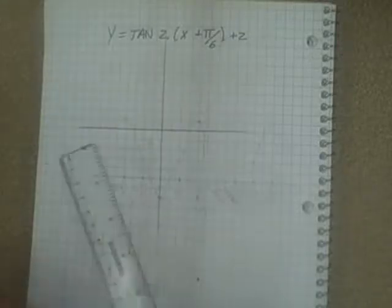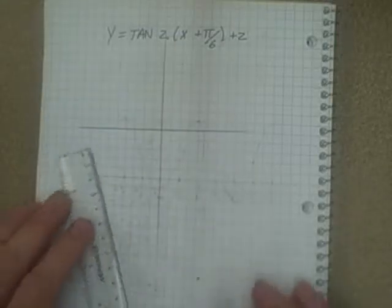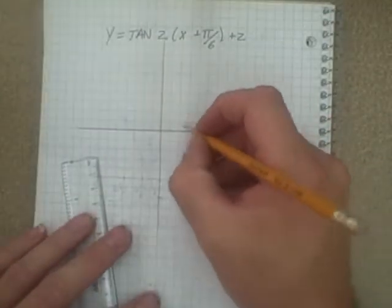Now the big thing with a tan graph is we have to recall that when we do the period calculation that we're only looking at 0 to π. So we don't do as many marks on our graph, we do half as many marks because we're only going to deal with the π instead of 2π like we do in a cos or sine graph.